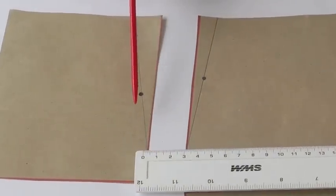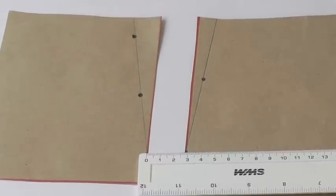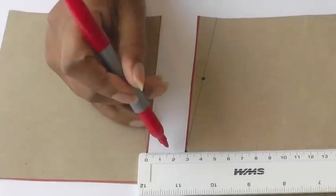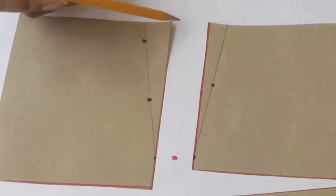First step, at the point of your dart place your ruler and find the midway point and make a mark, and from that point we're going to draw a line to the waistline.